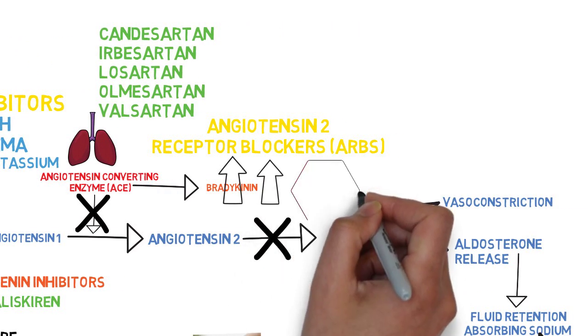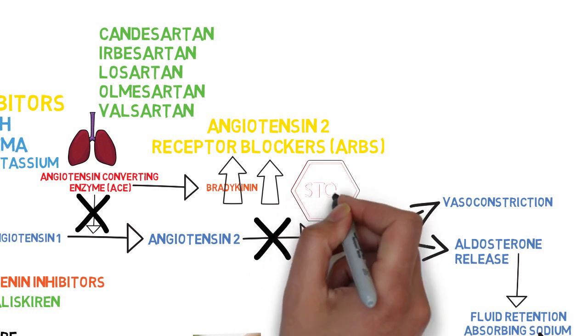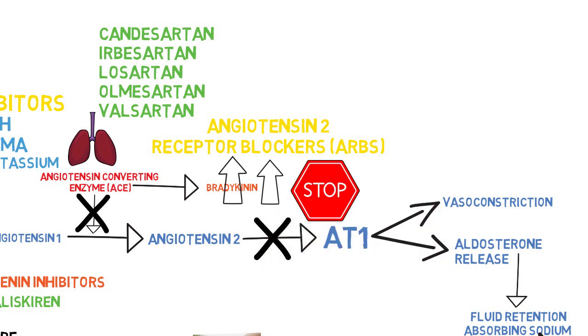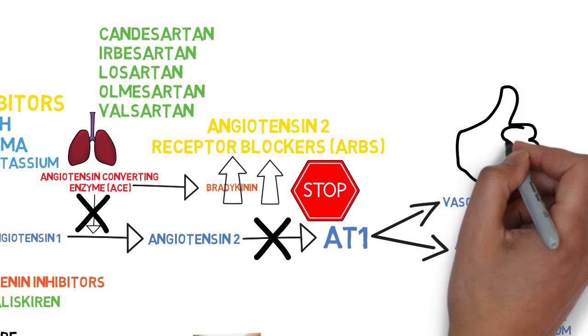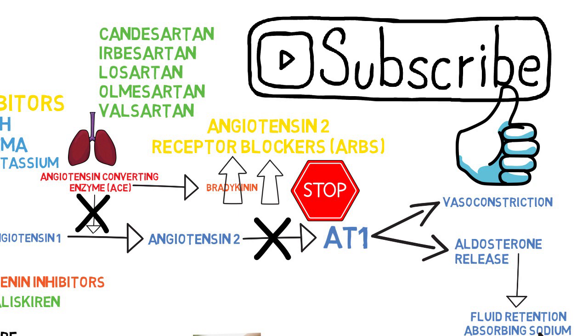To summarize, these drugs either stop the production of angiotensin 2 or stop it from binding to the AT1 receptor. Now that concludes this video. I'm Mike, your pharmacist. Thank you for watching. Please like or subscribe for more health education videos.